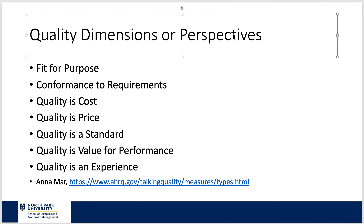Quality is a standard — we'll talk about standards and requirements a little bit. Quality is value for performance. What is value? The appreciation you get from paying for something. You can't compare Ruth's Chris Steakhouse to McDonald's, but you can compare McDonald's and Burger King or Taco Bell and talk about the value you get for money. You can compare Ruth's Chris to Morton's, for example. Quality is also an experience — how does it make you feel? It's a perception.